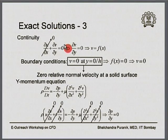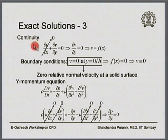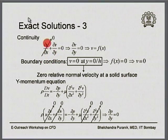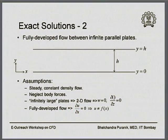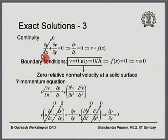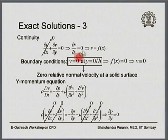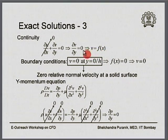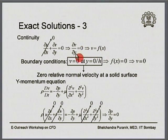We will take the continuity equation and the momentum equation and step by step simplify these under the given assumptions. Beginning with the continuity equation: divergence of velocity equals zero, which in 2D is ∂u/∂x + ∂v/∂y = 0. With the fully developed condition, ∂u/∂x = 0, so what remains is ∂v/∂y = 0, which immediately implies that v is not a function of y - v can be only a function of x.